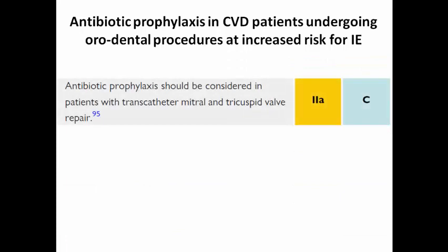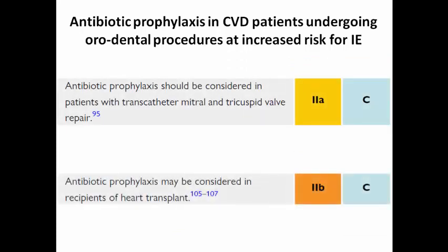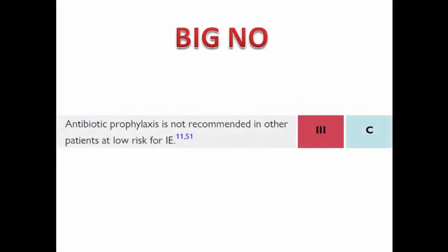The recommendation is Class IIa for those with transcatheter mitral and tricuspid valve repair, and Class IIb in recipients of heart transplants. Antibiotic prophylaxis is not recommended in patients at low risk for infective endocarditis. Note that intermediate-risk patients are not mentioned here because the decision is individualized — but in low-risk patients, there is no indication at all.